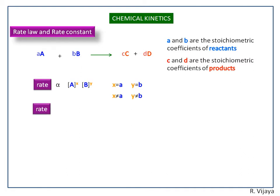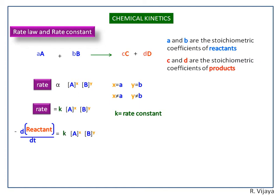Next, we remove the proportionality by introducing a proportionality constant that is called a rate constant. We write rate in terms of a differential equation: minus d[reactant] divided by dt is equal to k times concentration of A to the power x and B to the power y.